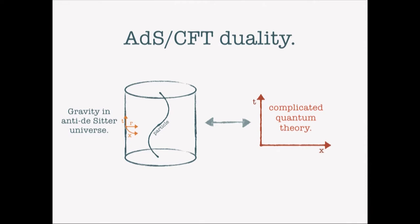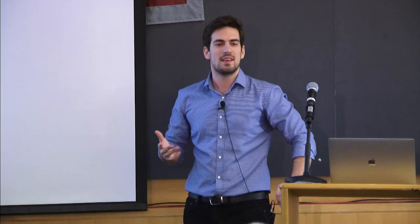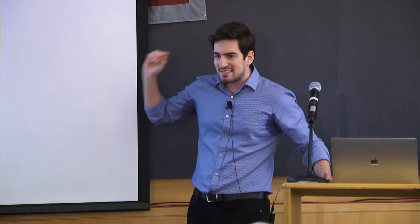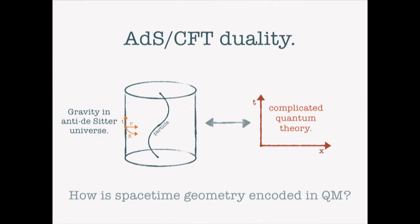The statement of ADS-CFT duality is that this gravitational theory is exactly equivalent to an ordinary quantum theory with no gravity, living in one dimension lower. These two different descriptions of the same physics don't even live in the same number of dimensions. For a three-dimensional universe, the dual is a two-dimensional quantum theory living on the boundary of the can. This equivalence was proposed 20 years ago, has stood the test of time, and is an example of emergent space — the geometry of the gravitational picture is somehow hidden in the structure of the quantum theory.